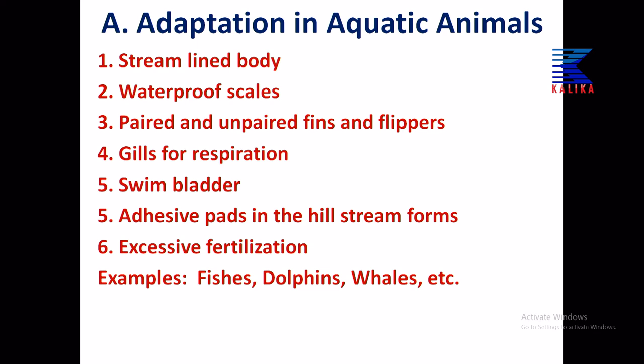Some examples: fishes, dolphins, whales, crabs, octopus — whatever animals live in water. To summarize: streamlined body, waterproof scales, paired and unpaired fins, flippers — flippers are fin-like structures but together with bone and muscle, not only thin tiny fins — gills for respiration and in some forms lungs, swim bladder, adhesive pads in hill-stream forms, and excessive fertilization. In some cases, fins are modified as wings and adapted for swimming or gliding.